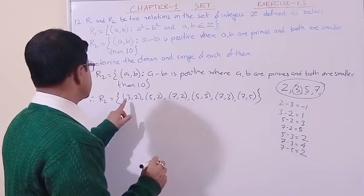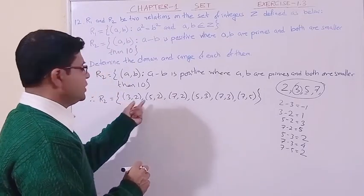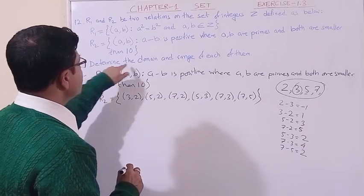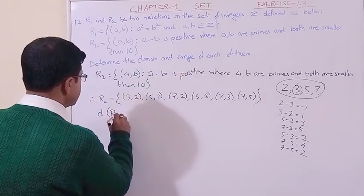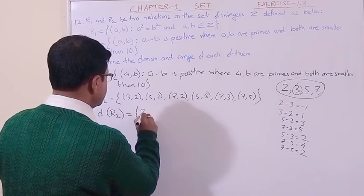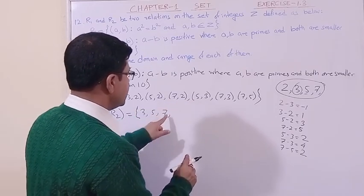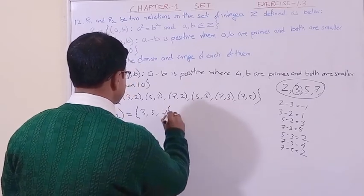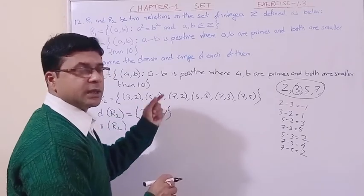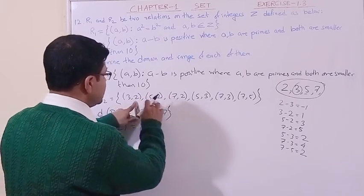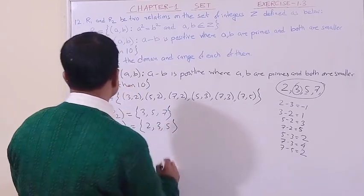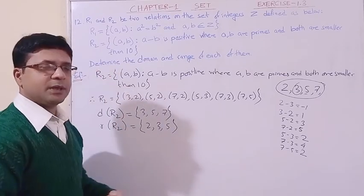So R2 = {(3,2), (5,2), (7,2), (5,3), (7,3), (7,5)}. The domain is the set of first components: {3, 5, 7}. The range is the set of second components: {2, 3, 5}. In this way we have found the domain and range of relation R2.